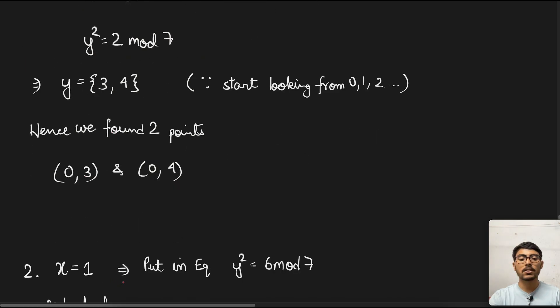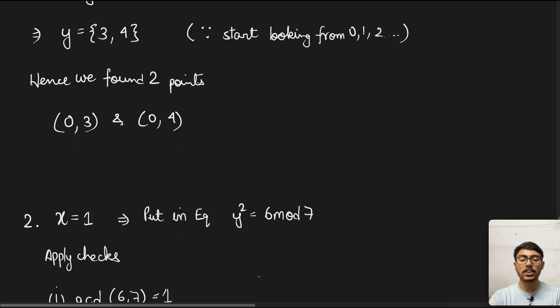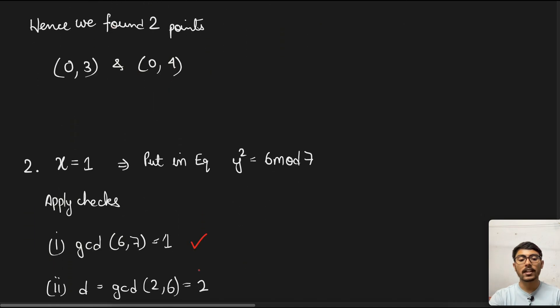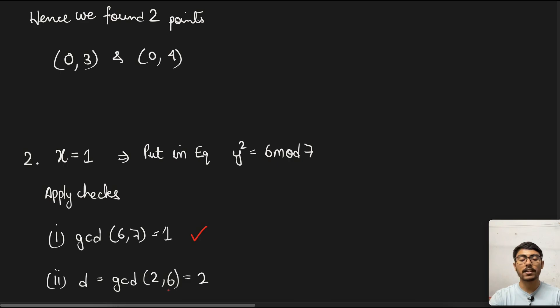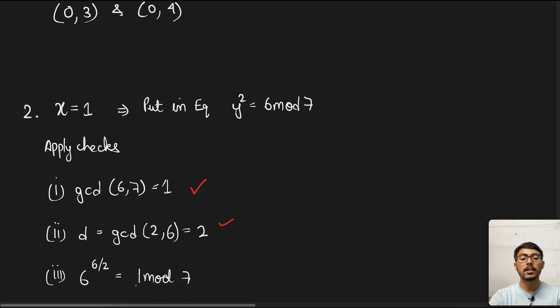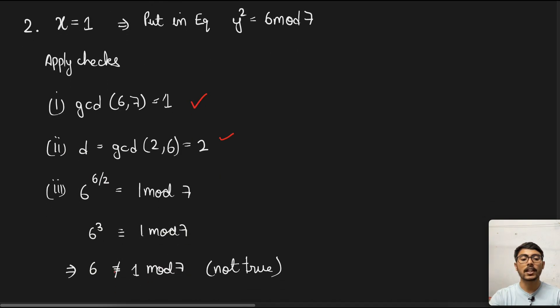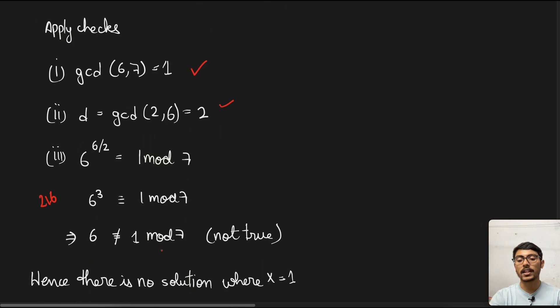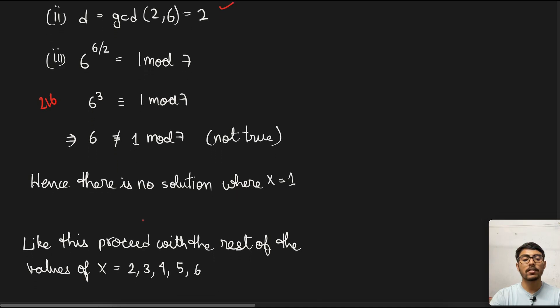Next, we do the same for x = 1. Put in the equation, we get y² ≡ 6 mod 7. First, we apply the checks. gcd(6, 7) = 1. Okay. Next, gcd(2, 6) = 2. Next, 6^(6/2) should equal 1 mod 7, which if we check is not the case, because 6³ = 216 and 216 mod 7 is not equal to 1. So there are no solutions where x = 1.